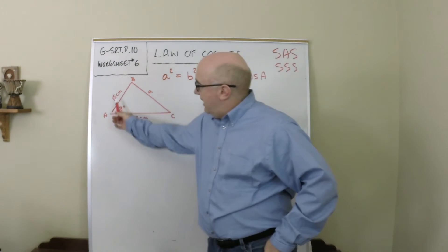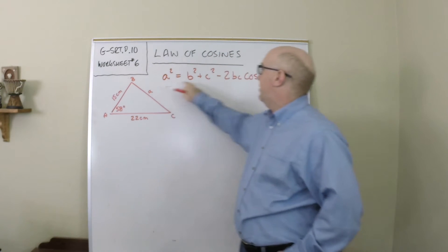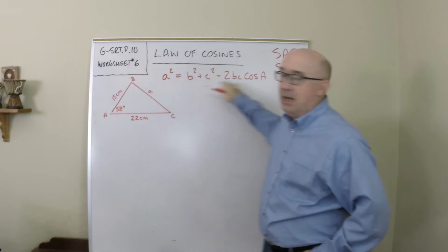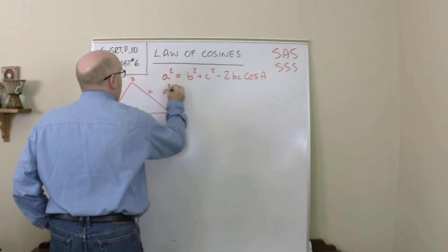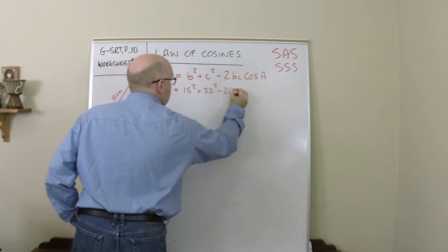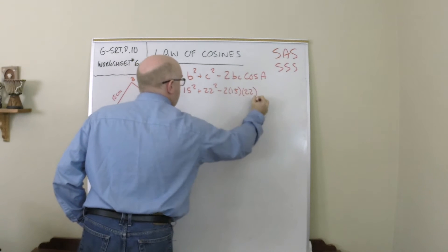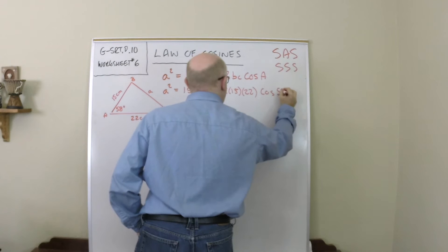So here I have a side-angle-side relationship. I know angle A so that's why I got this set up the way I do and I can solve the problem. So this time I'll walk myself all the way through it and in goes the info. Cosine of 58.